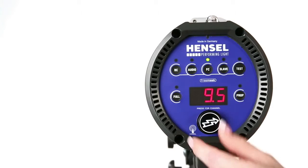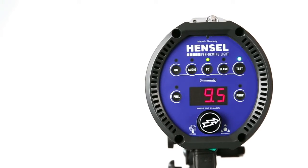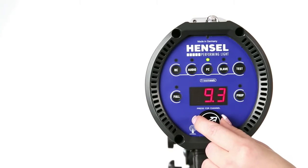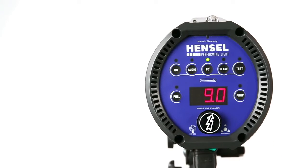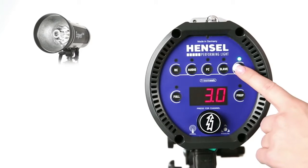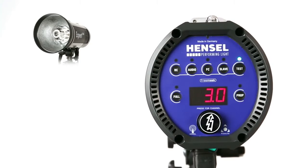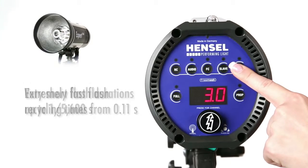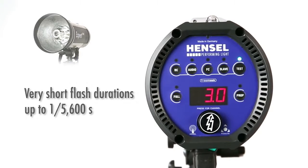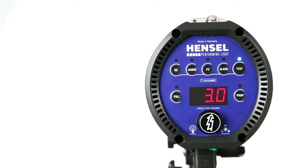Automatic power drop is the internal power reduction that occurs automatically when power is reduced without flash release. The test button releases a test flash manually. By holding the button, the fastest possible sequence of flashes is released. Flash readiness is indicated by the green LED located right above the test button.